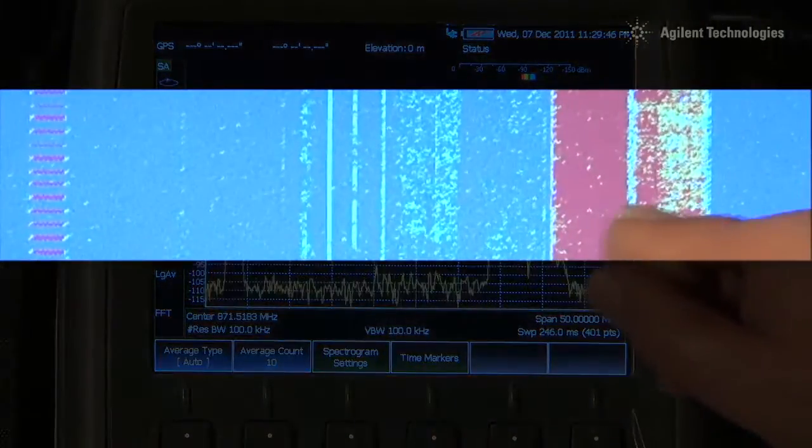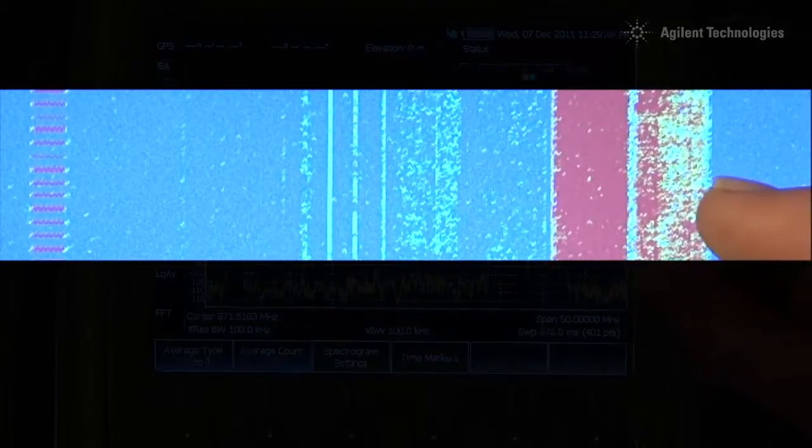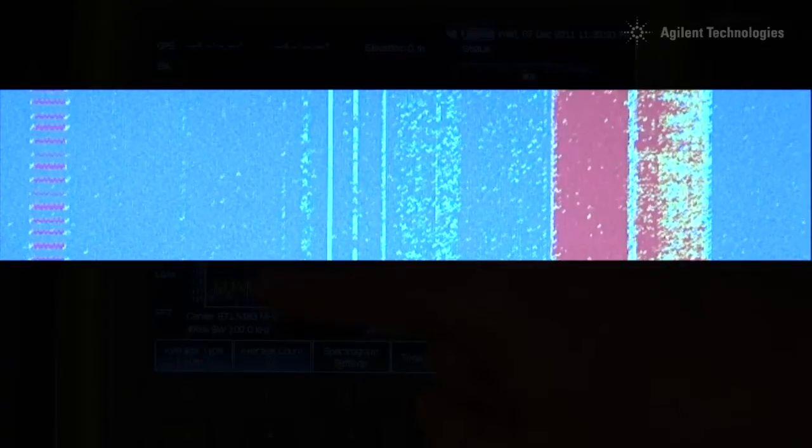Here you can see we have two strong spread spectrum signals that are present the entire time. And here you can see a series of narrow band signals, fairly weak, and over on the left you can see another broad modulated signal that is quite intermittent.